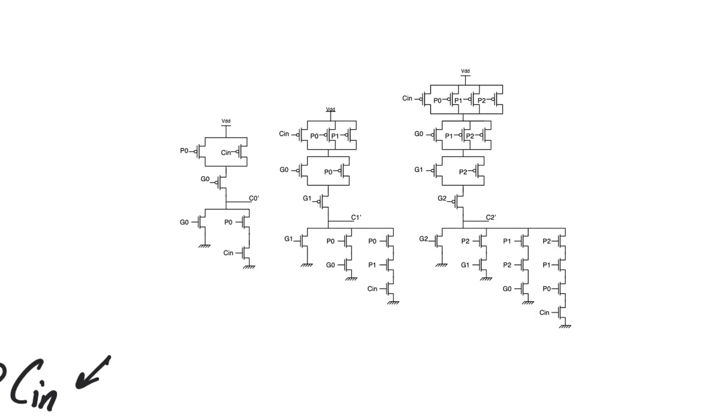If we take another look at the ripple carry adder, the delay increases with a linear order. But let's consider what happens to the delay here. Let's compare the delay of C0 and C2. Let's think about sizing the gates for resistance equal to the unit inverter. For the pull-down network of C0, we have 2, 2, and 1. For the pull-up network, we have PMOSes of size 4. We can size the rest of the networks the same way.